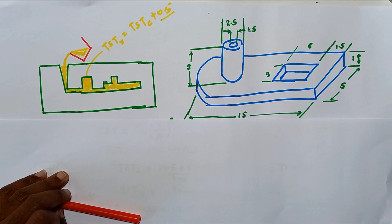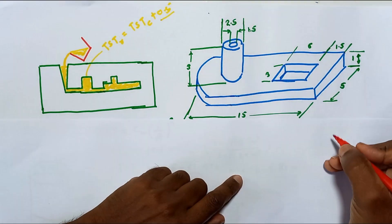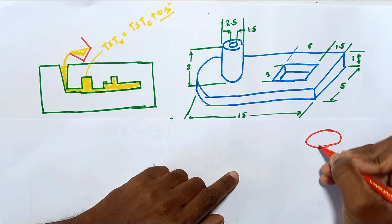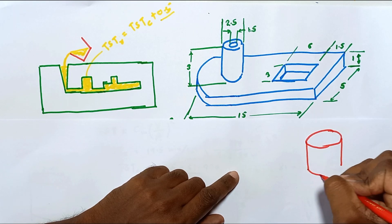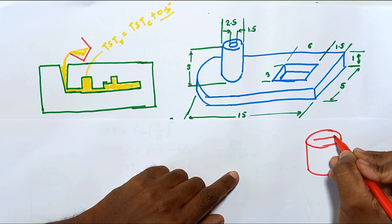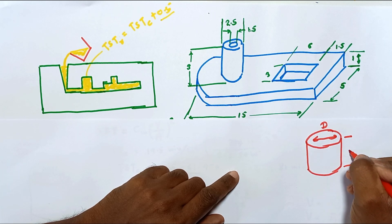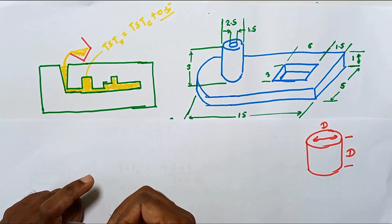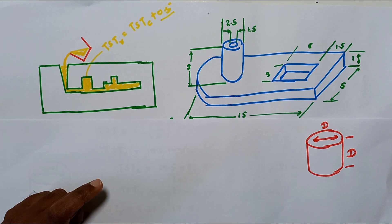We have to design the riser such that the height to diameter ratio is equal to 1. That means if the diameter of the riser is D, its height is also equal to D. So in this problem, we have to determine this dimension D.